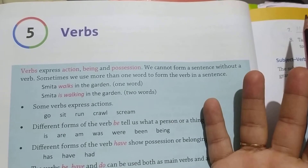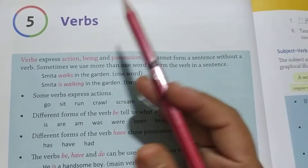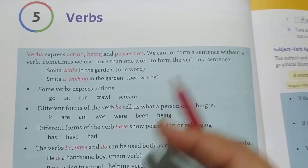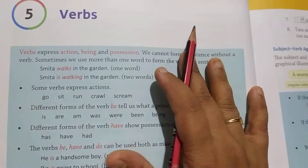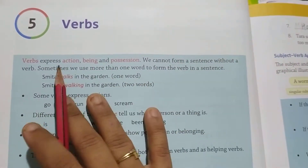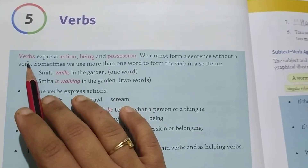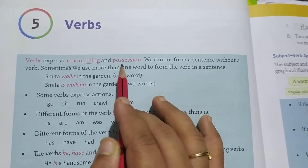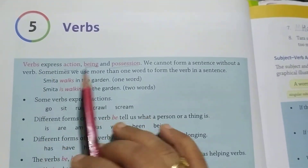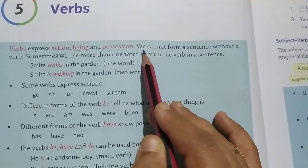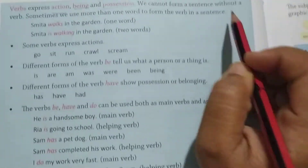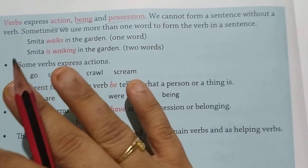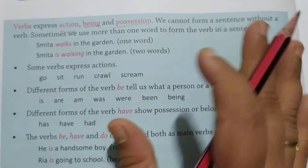What do verbs mean? Verbs kya hote hain — verb means actions, being, ya phir positions. Verbs hummye batate hain — actions, being, ya phir position. We cannot form a sentence without a verb. Hum koi bhi verb ke bina sentence bana nahi sakte hain.